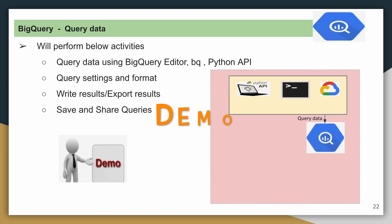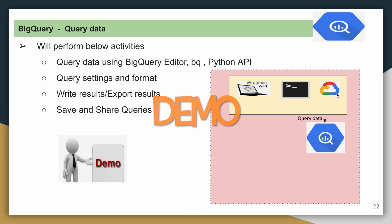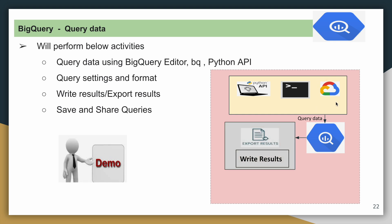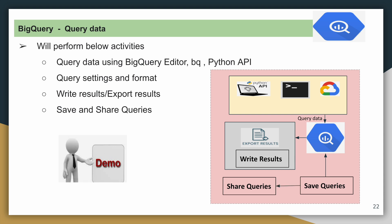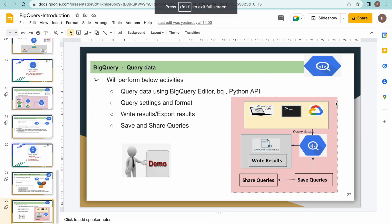As part of this demo, we will try to query data using different options like Python API, BQ tool, or BigQuery editor. We will also try to export the results, write results into another BigQuery table or file, and see how we can save and share queries.